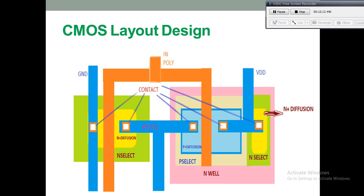The next layout design step is drawing the poly layer. If a poly layer crosses any P-plus or N-plus diffusion region, it creates PMOS or NMOS transistors by forming source and drain regions. As you can see in the layout, the poly layers of both transistors are connected with each other, because in the CMOS circuit the gate terminals of both PMOS and NMOS transistors receive the same input. This is how the poly layer deposition is done in CMOS fabrication.